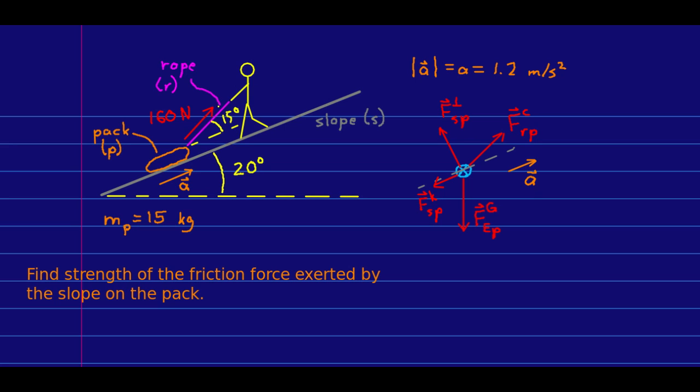So here is an example. We have a hiker using a rope to pull their pack up a slope, and the rope is making an angle of 15 degrees relative to the slope, and the slope is 20 degrees above the horizontal. Right now the hiker is pulling with a force of 160 newtons and the pack is accelerating up the slope at 1.2 meters per second squared. I've drawn a free body diagram for the pack. There's the gravitational force, a perpendicular force and a kinetic friction due to the slope, and the force that the rope is exerting on the pack. And what we want to do here is find the strength of the friction force exerted by the slope on the pack.